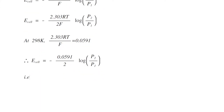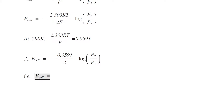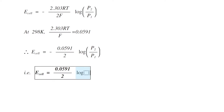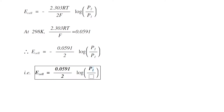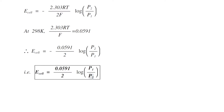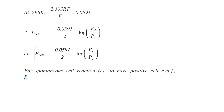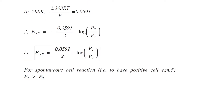Inverting the pressures to remove the negative sign, E_cell becomes 0.0591/2 log of (P1/P2). This is the final expression for the EMF of electrode concentration cell reversible to cations. For spontaneous cell reaction, that is to have positive cell EMF, P1 must be greater than P2.